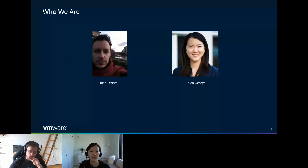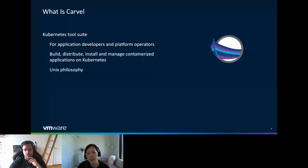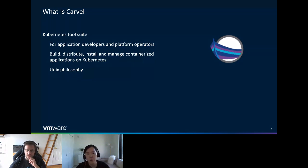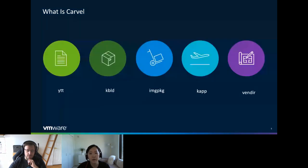What is Carvel? Carvel is a set of Kubernetes tools — note the plural there, it's not a single tool, but rather a tool suite that helps application developers and platform operators build Kubernetes applications, distribute them, and install them. It consists of single-purpose composable tools based on Unix philosophy, so each tool does one thing very well and yet they work well together. Carvel consists of YTT, KBuild, Image Package, CAP, and Vendor, along with other tools such as CAP controller for package management and other experimental tools. You can learn more at carvel.dev.